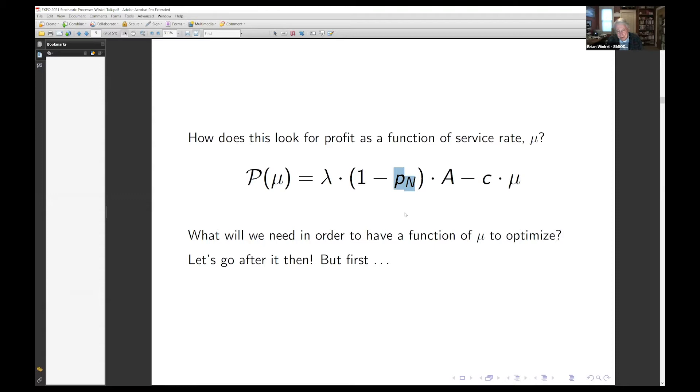So what we'll do is we're going to look at randomness. And I've just listed a whole bunch of events. And we could talk about whether they're random or not. Here's one right here that I've always found students find interesting: the number of channel switches per minute performed on the TV set by the couch potato in the dorm lounge. Some of them would say that's random, but then someone always says he's always switching during commercials. So this is an example of an event that's not random, but there are other things that might be random.